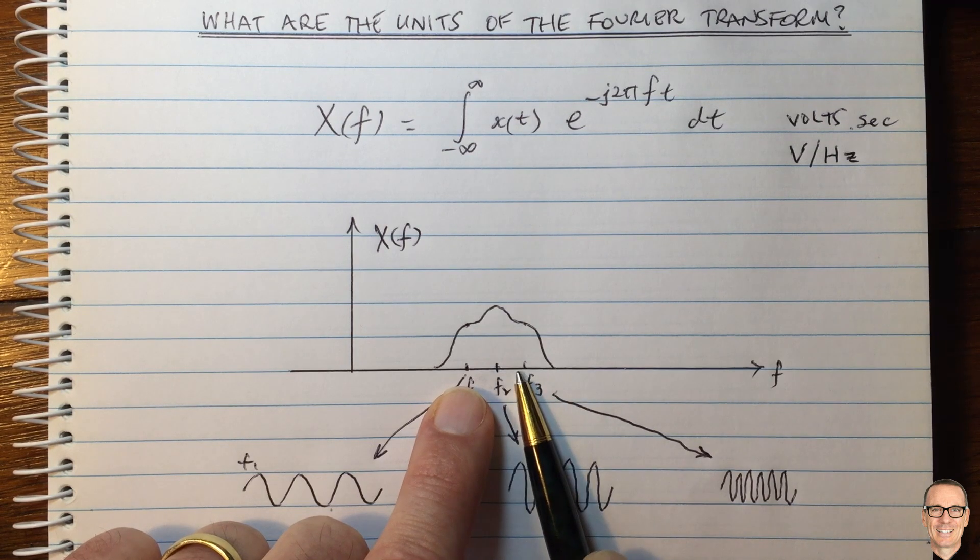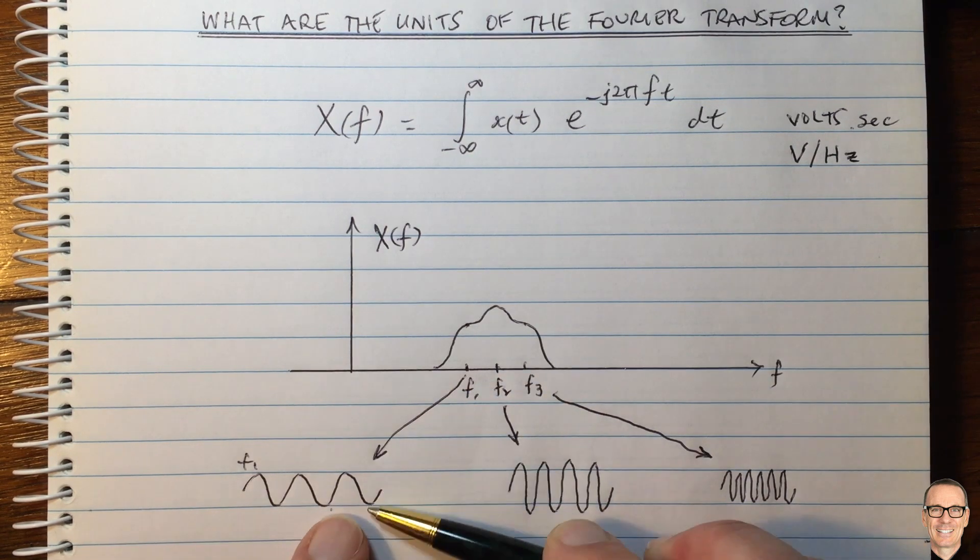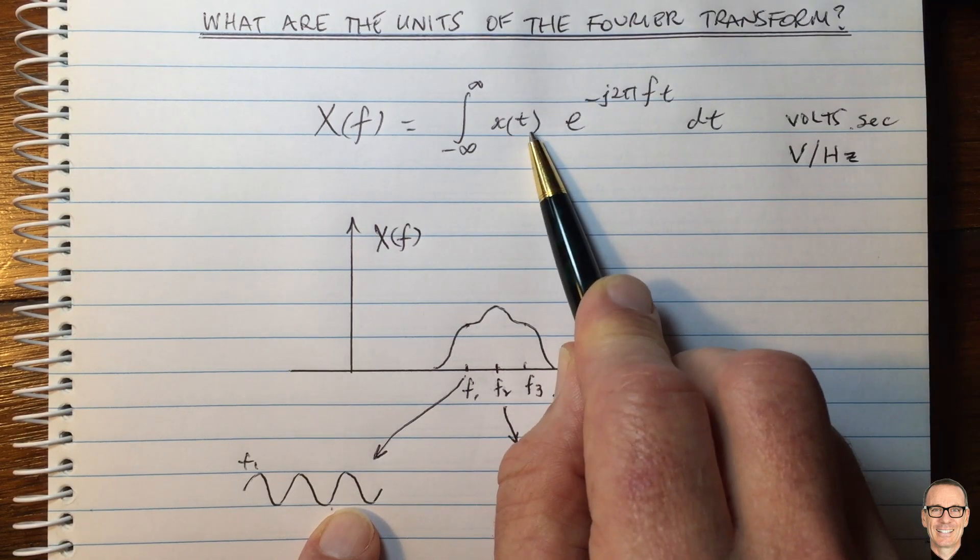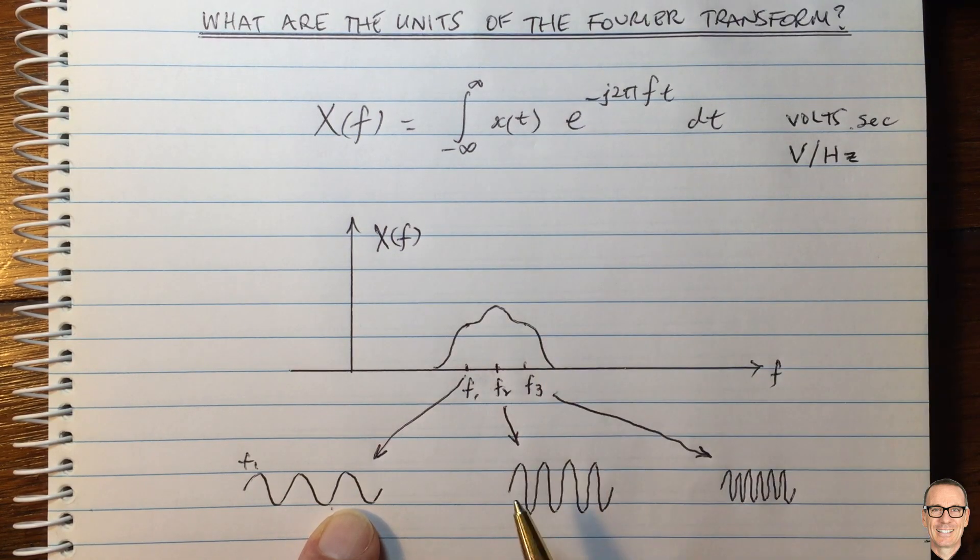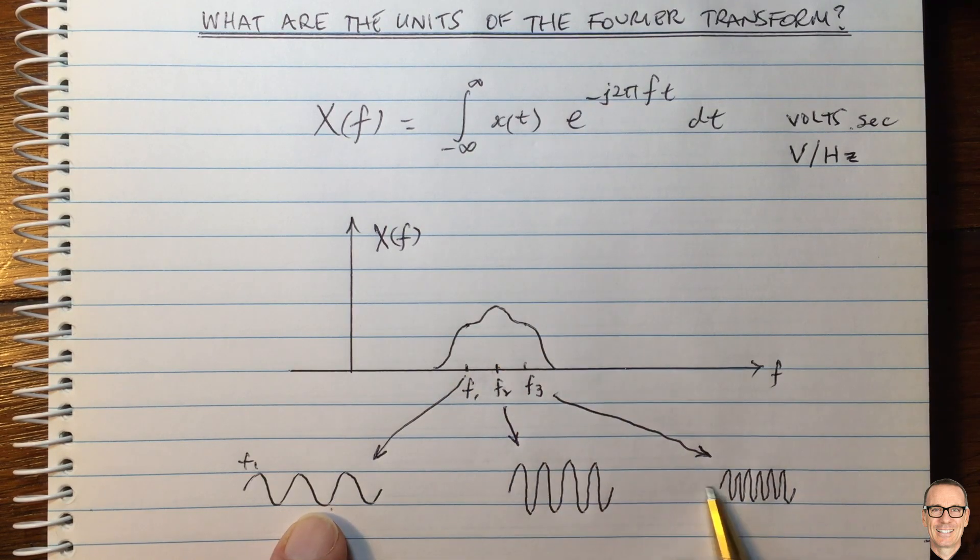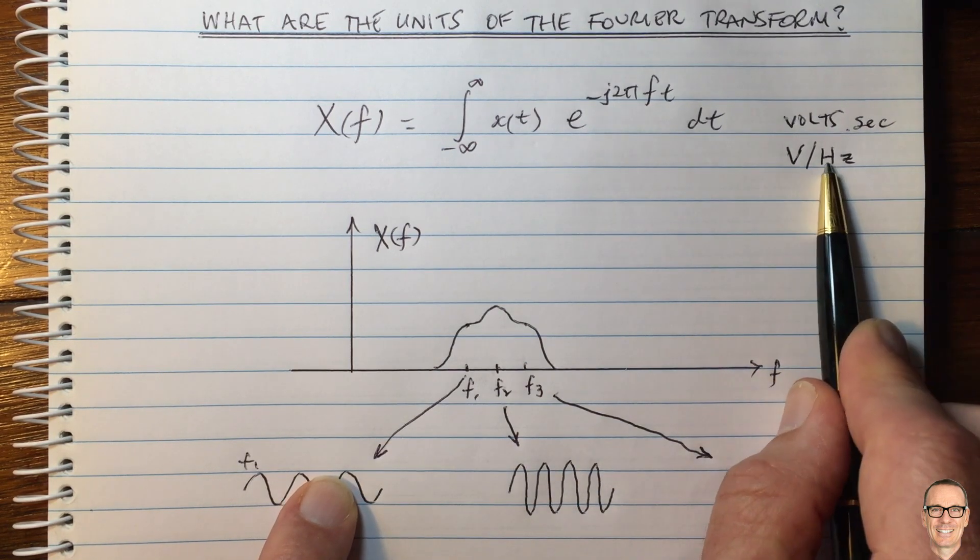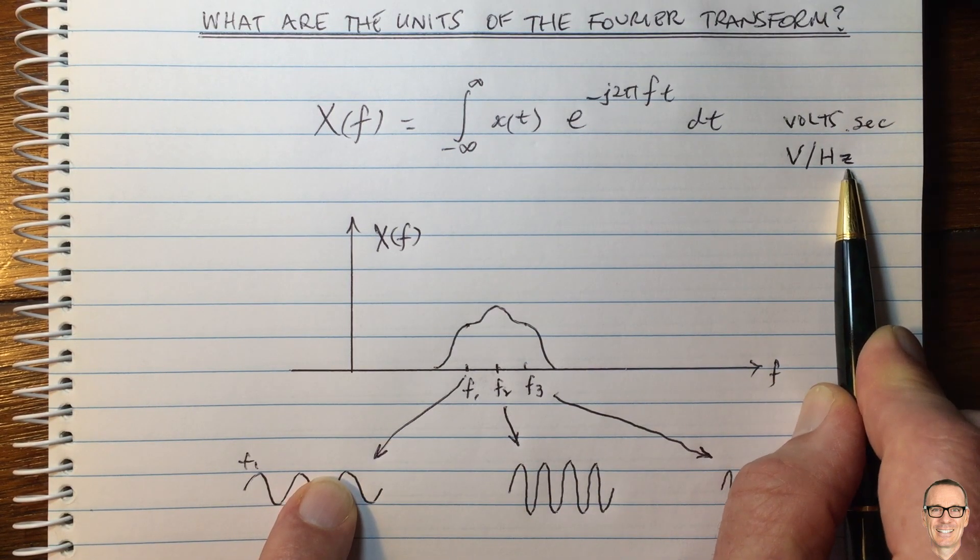And, of course, that can't be, because it's infinite resolution. You can't be having infinite voltage. The original signal did not have infinite voltage. So what it tells us is that when you think about it like this, you realize that it has to be a density.